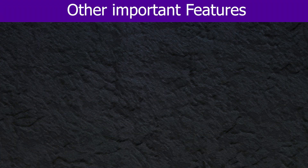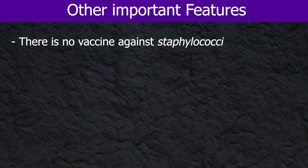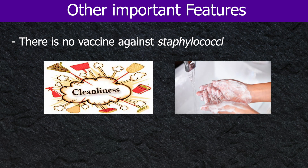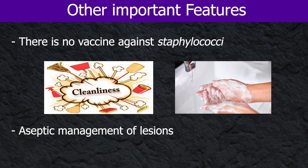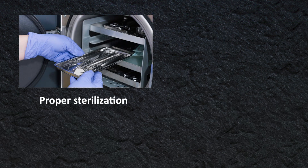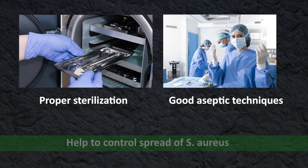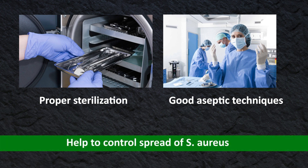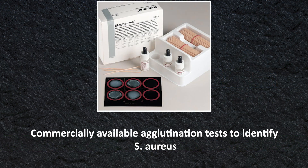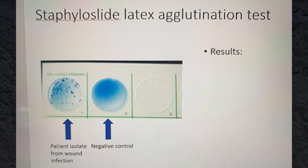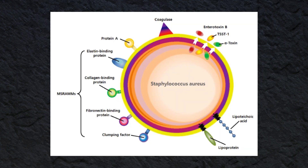Isolates of MRSA with reduced susceptibility or full resistance to glycopeptide antibiotics are uncommon but have been detected periodically. These isolates have thickened cell walls that reduce susceptibility, or carry the vanA gene conferring full resistance, and can be difficult to detect in the routine diagnostic laboratory. There is no vaccine against staphylococci. Cleanliness, frequent hand washing, aseptic management of lesions, proper sterilization of instruments, and good aseptic techniques when handling surgical instruments help to control the spread of S. aureus. There are commercially available agglutination tests to identify S. aureus.